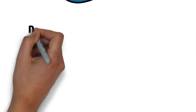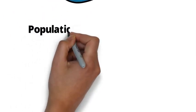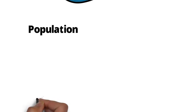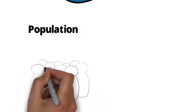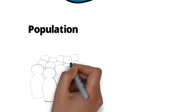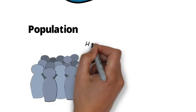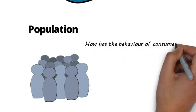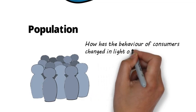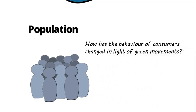Population. Do different populations interact with your topic in different ways? Sample populations can include women, children, college students, consumers, immigrants, animal species, and other things. For example, how has the behavior of consumers changed in light of green movements?